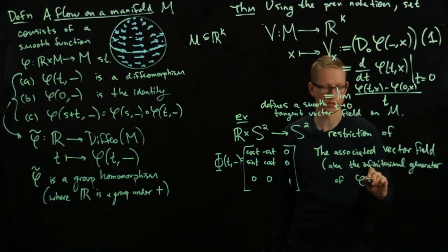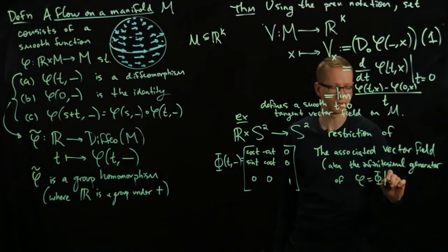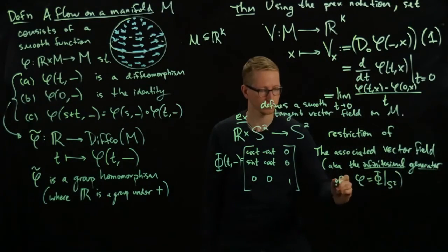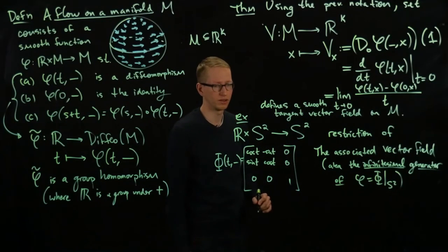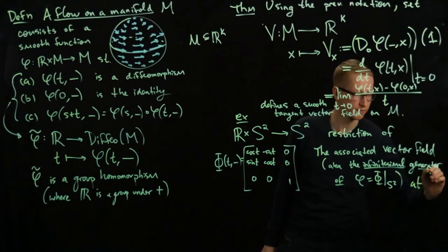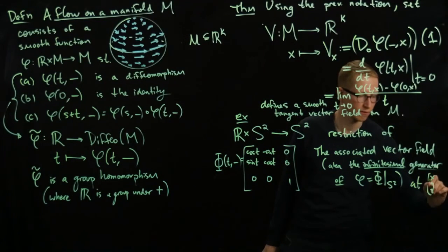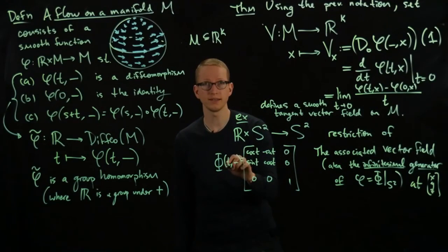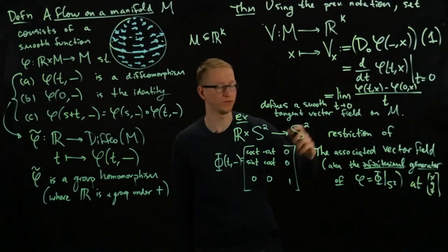φ is the restriction of big Φ to S². So the associated vector field at (x,y,z), which is a point on the sphere, all I do is I plug this in and differentiate it by this formula.